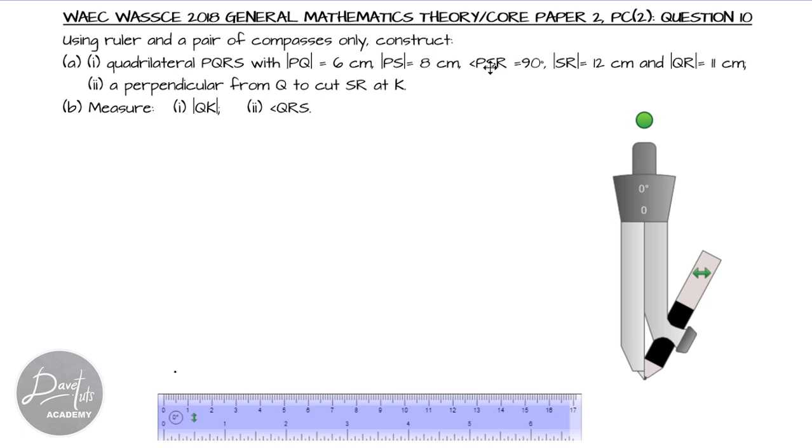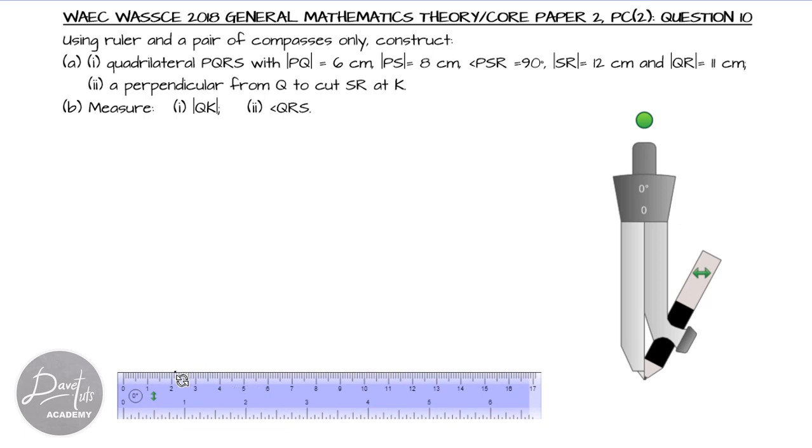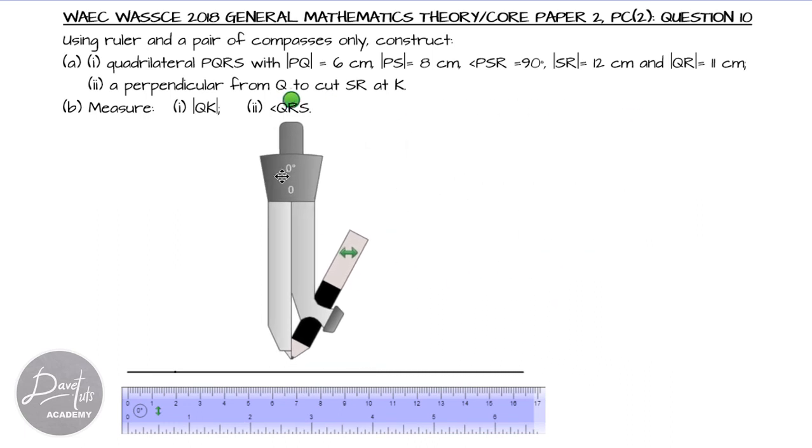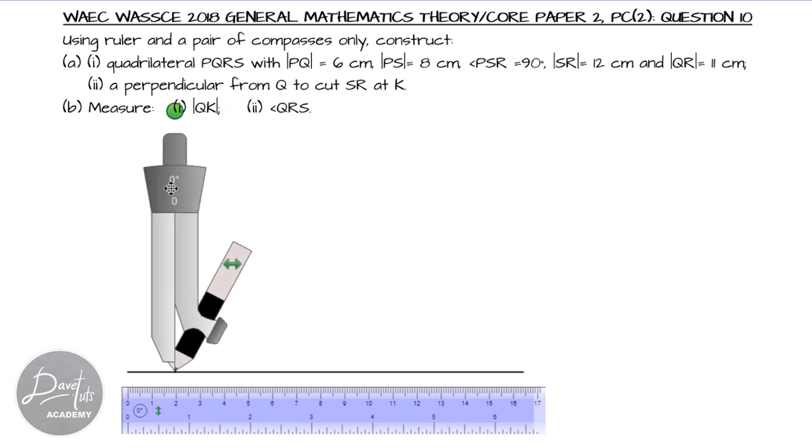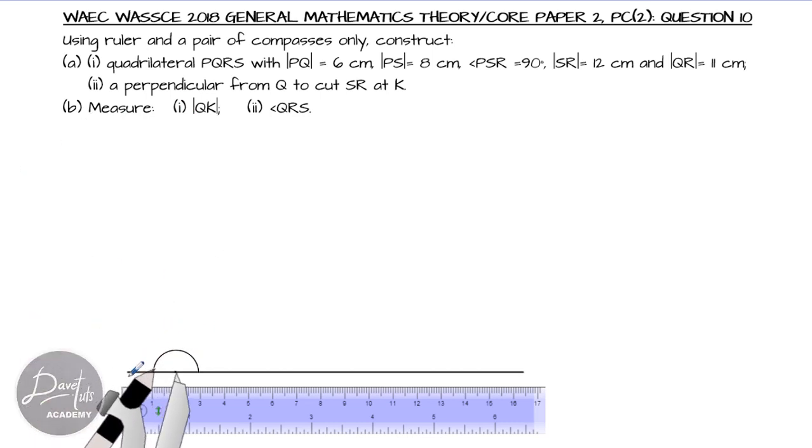Now, how do we construct an angle of 90 degrees? We know that 90 degrees is half of 180 degrees, and 180 degrees is angle on a straight line. So, if we take our point that we want to note and we draw a straight line, we are taking our point. Since we are given angle PSR, that means this point is going to be point S. Now, from point S, first and foremost, we want to notice the angle on a straight line, which is 180 degrees. So, taking our compass into the point, we want to draw a semicircle, which is 180 degrees.